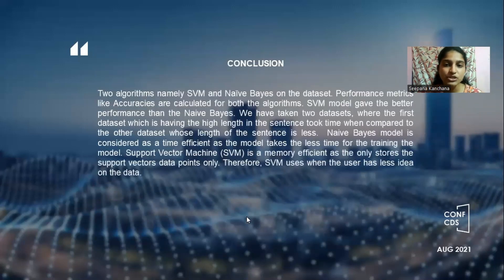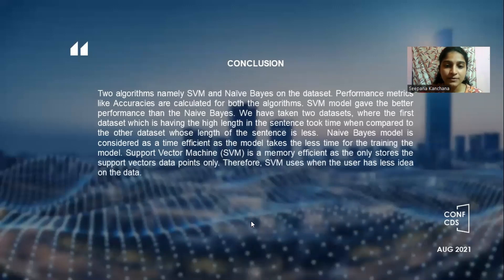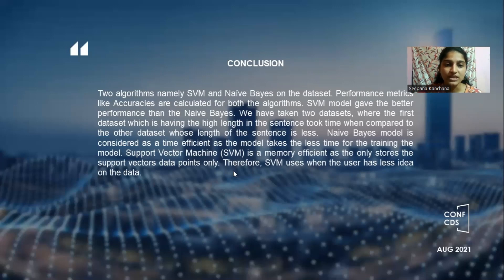Coming to the conclusion, we used two algorithms for classification: SVM and Naive Bayes. As per the results, SVM gives the best results. However, when there is a large dataset, it takes a lot of time for training. Naive Bayes and SVM are each best in their own context. When there is large data, Naive Bayes is best because it takes less training time — it is time-efficient. SVM is memory-efficient because it only stores the support vector data points. When we have less information about the data, we use SVM. Likewise, we use SVM and Naive Bayes for classification through sentimental analysis.